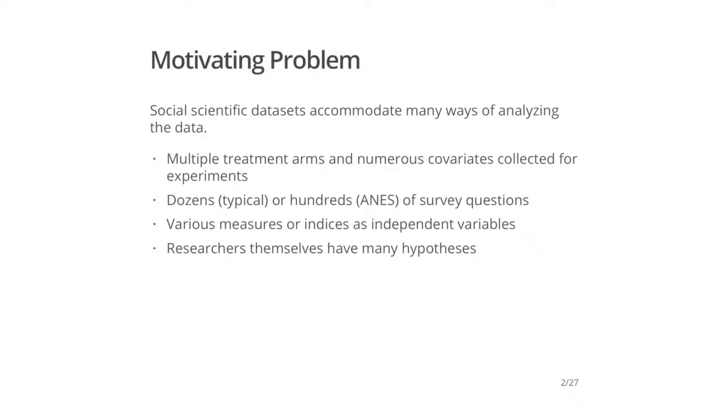Our motivating problem is that social scientific datasets accommodate many, many ways of analyzing data. We have multiple treatment arms and numerous covariates that are collected for experiments. In surveys we have dozens, or even hundreds, of questions that we could potentially analyze. We can also think of various measures or indices to use as dependent or independent variables. In other words, there are a lot of researcher degrees of freedom when analyzing both observational and experimental data in social science.